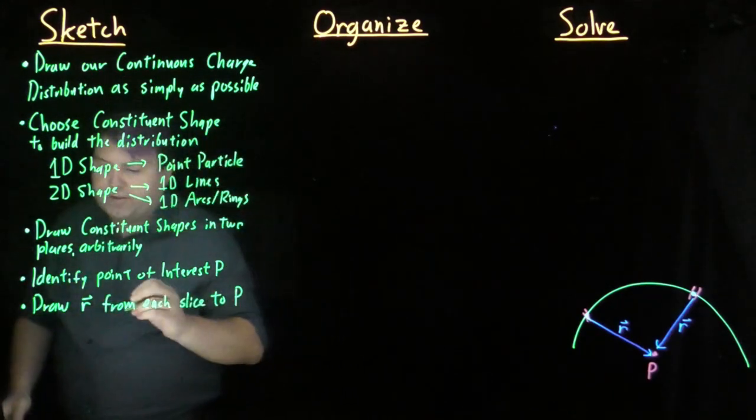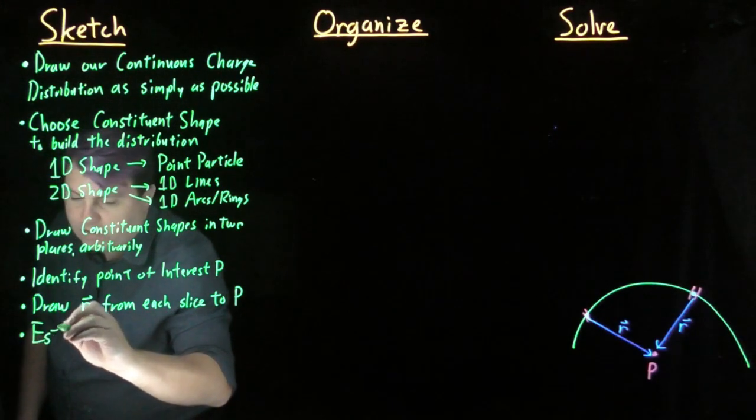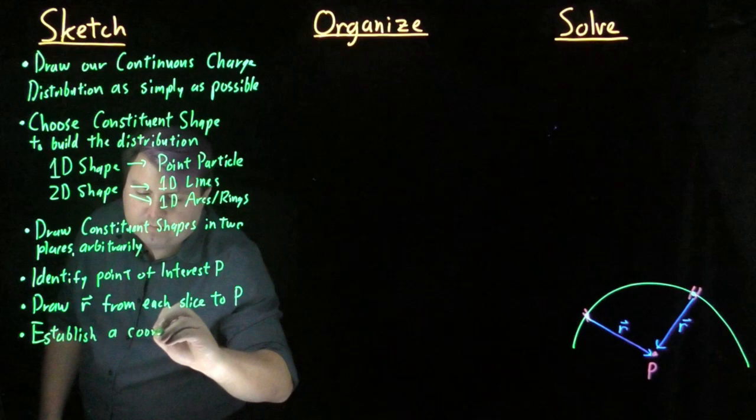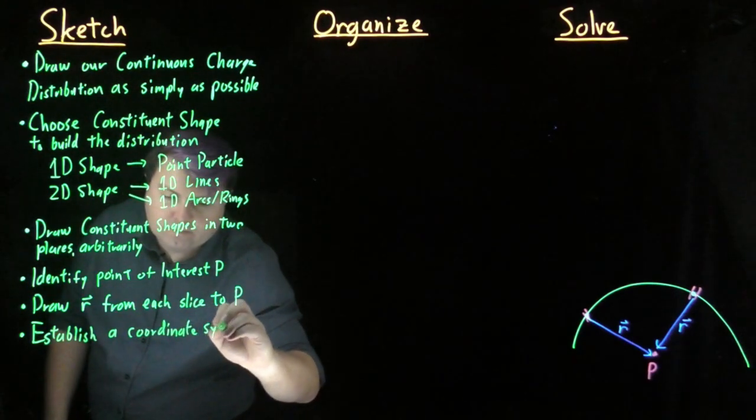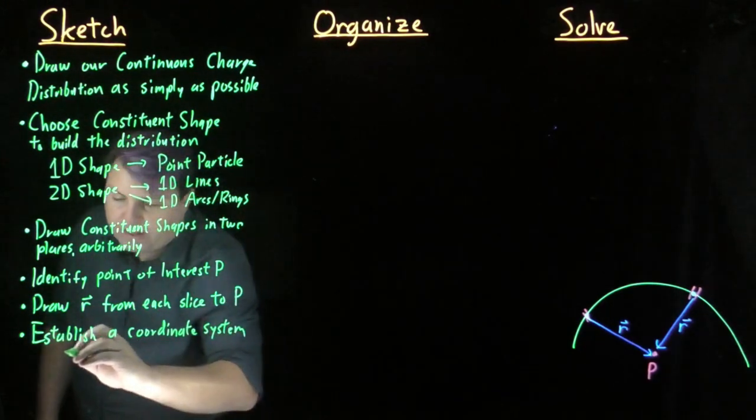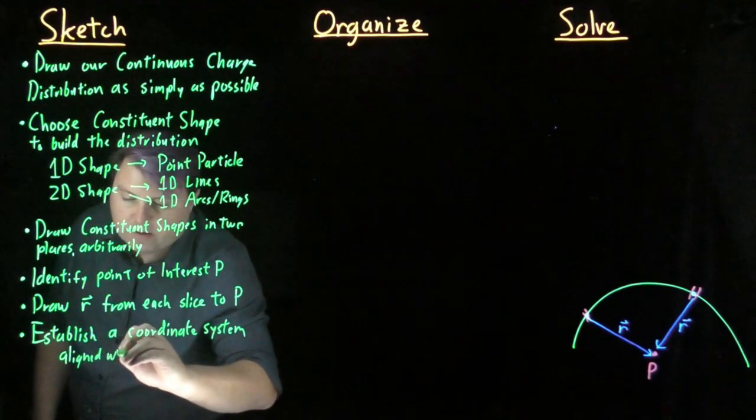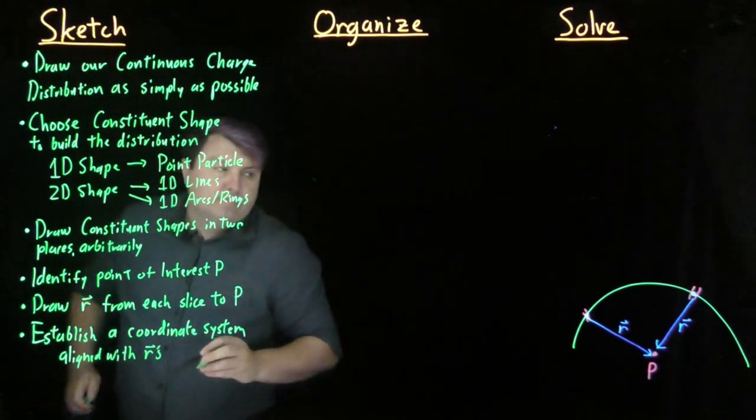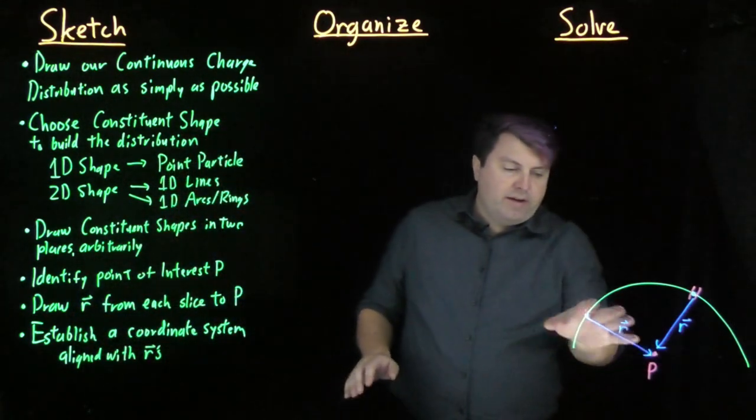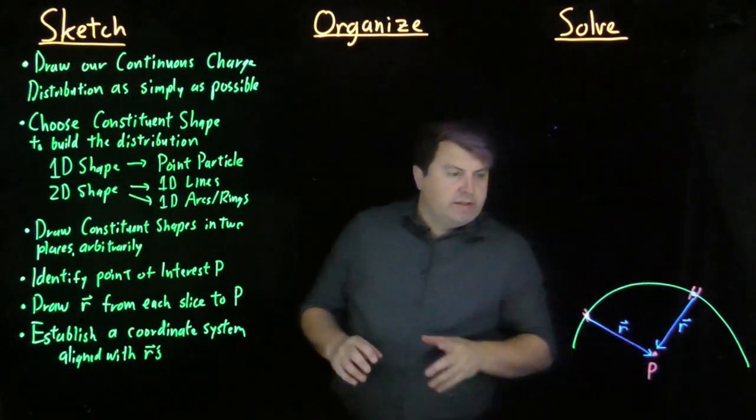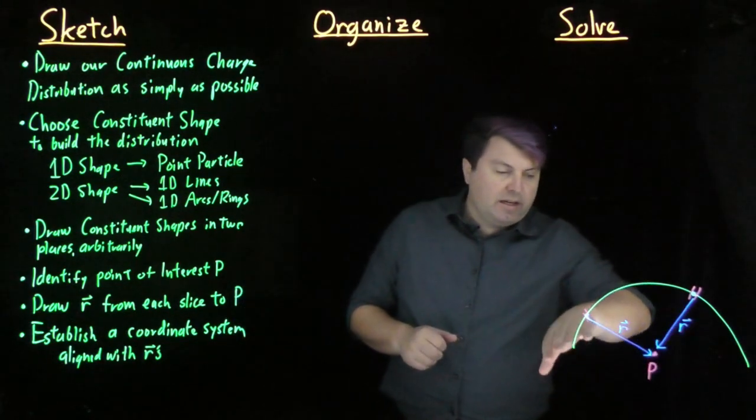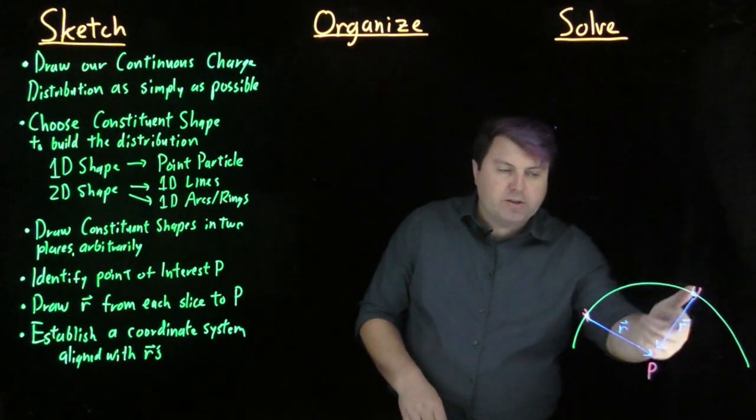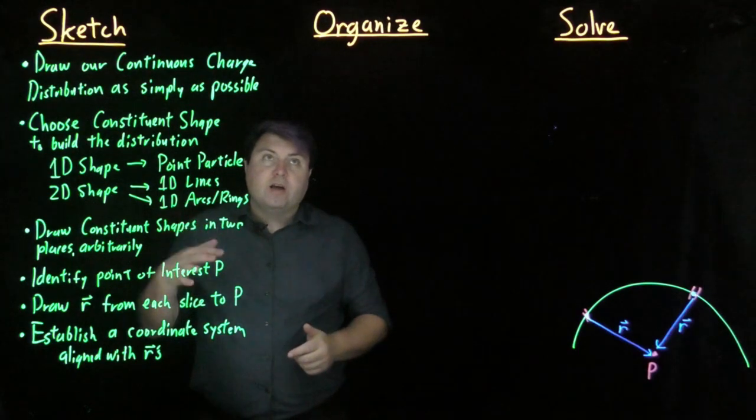Once we have all of this, we want to then establish a coordinate system that is aligned with my R vectors. As I'm looking here, doing this in two dimensions might be really tough, but if I did this in polar coordinates, then I'm really just doing it in one dimension, and each time I'm just going in the negative radial direction.